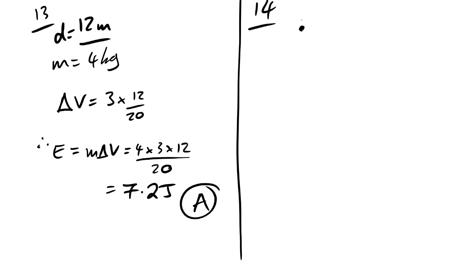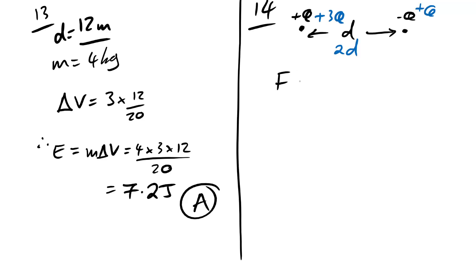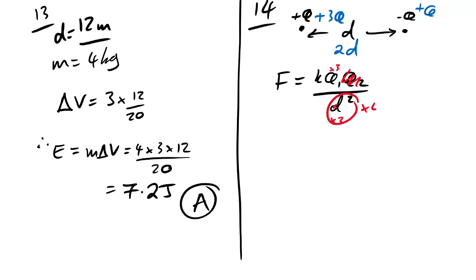Question 14: charges +Q and −Q with separation d. Charges change to +3Q and +Q (adding 2Q to each), separation increases to 2d. F = kQ₁Q₂/d². Q₁ goes from Q to 3Q (×3), Q₂ goes from Q to Q (×1, though sign changes), and d² increases by ×4. Net force ratio = 3/4. Answer is D.